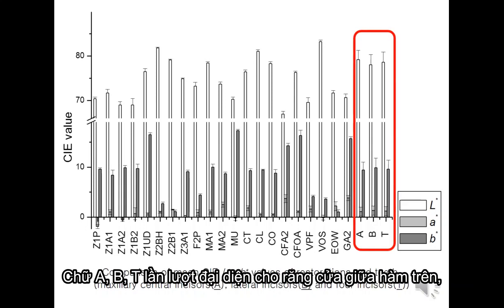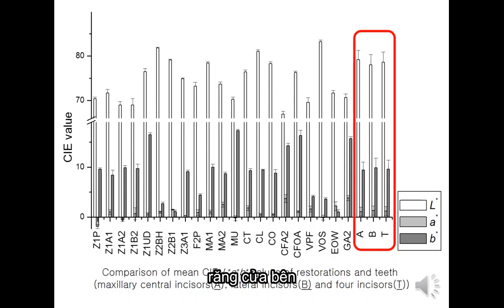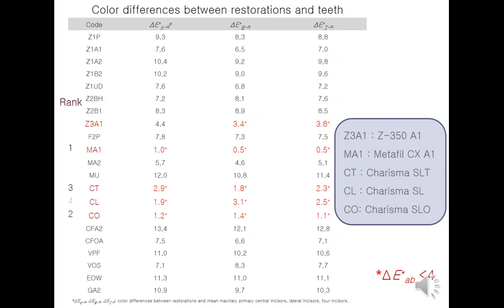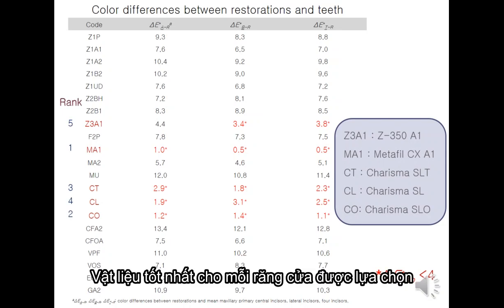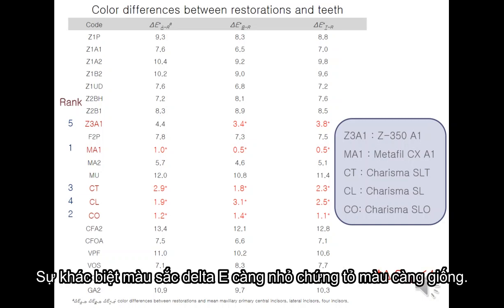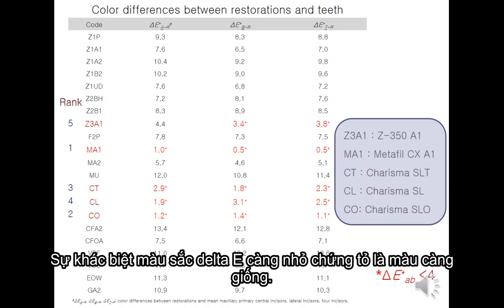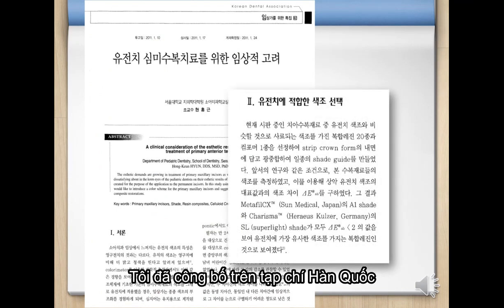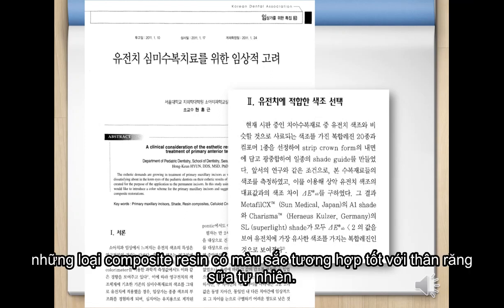Letters A, B, and C stand for maxillary central incisors, lateral incisors, and canines respectively. The best candidates were selected for each incisor by calculating the color differences. The smaller the color difference Delta E-ab, the better the color matching. I published in a Korean journal that those composite resins matched well to the natural primary crown color.